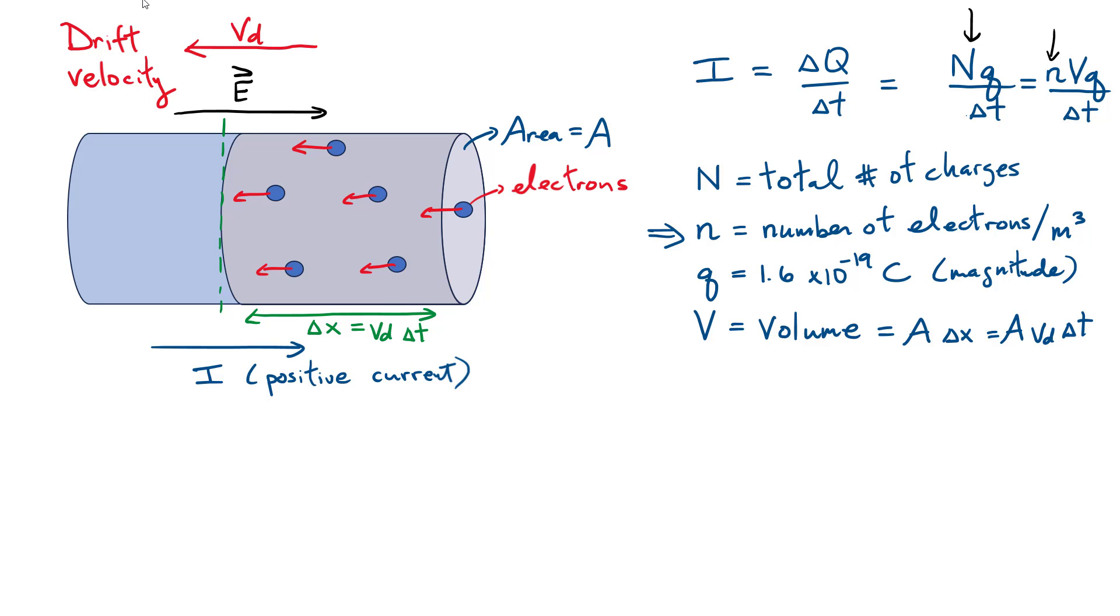That gets multiplied by the charge of each individual electron, which is 1.6 times 10 to the negative 19 coulombs. Since I'm looking at a density, I need to multiply by the volume in order to get the total number of charges. What is the volume I'm considering? It's a volume of a cylinder, so I'm considering a cross-sectional area A multiplied by its length delta x. And that delta x can be written as this drift velocity multiplied by delta t. In some time delta t, all those electrons in this shaded area are going to cross this green plane. So let's go back to our definition and substitute. The volume gets substituted by the cross-sectional area multiplied by that delta x, which I've written as vd multiplied by delta t.